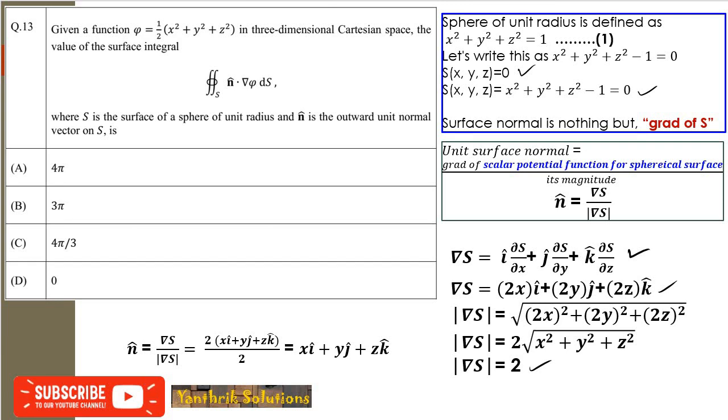The surface normal vector is defined as the gradient of this particular surface function. So grad S is the surface normal, del S. It is defined as i(∂s/∂x) + j(∂s/∂y) + k(∂s/∂z).